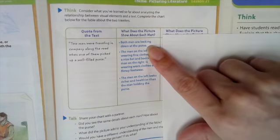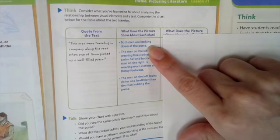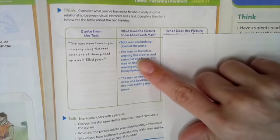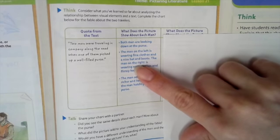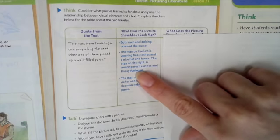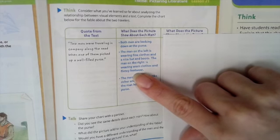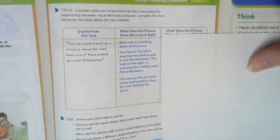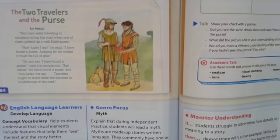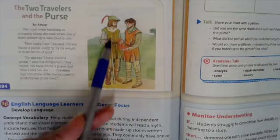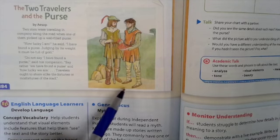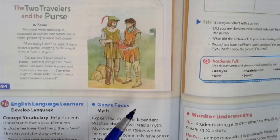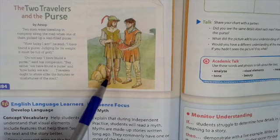Both men are looking down at the purse. The man on the left is wearing fine clothes and a nice hat and boots. The man on the right is wearing worn clothes and flimsy footwear. We did say this man had nicer clothes — but look at his boots compared to the other guy's flimsy little shoes. So that further tells us that this guy probably has more money.